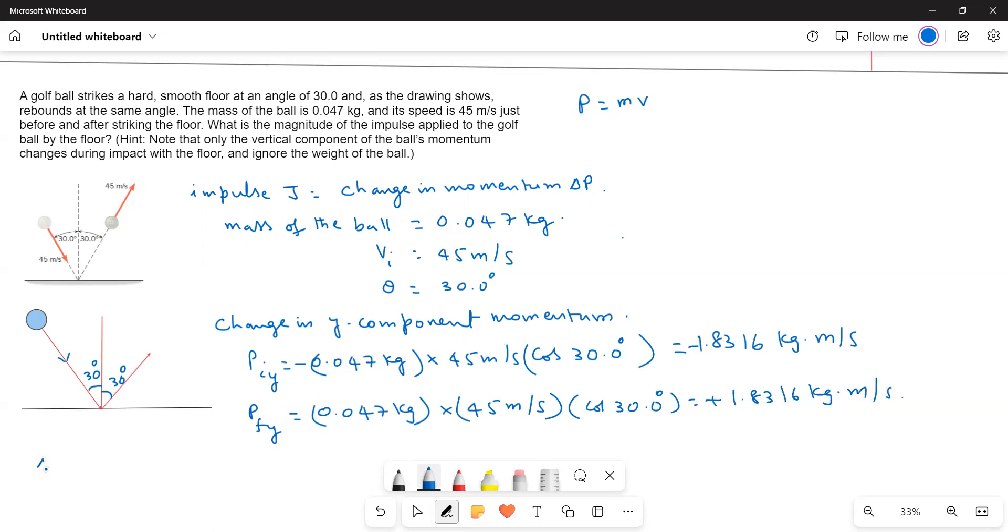Change in momentum Δp is equal to P_f minus P_i. So that is equal to 1.8316 minus of minus 1.8316, that is equal to 3.66 kilogram meter per second. As we know, J is equal to Δp, therefore the impulse is equal to 3.66.